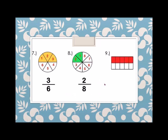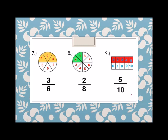Another example, Number 9: we have a rectangle. How many shaded parts do we have? 1, 2, 3, 4, and 5. Therefore, the numerator is 5 — the top number is 5. Over how many total parts? 5, 6, 7, 8, 9, and 10. Therefore, the fraction is 5 over 10.